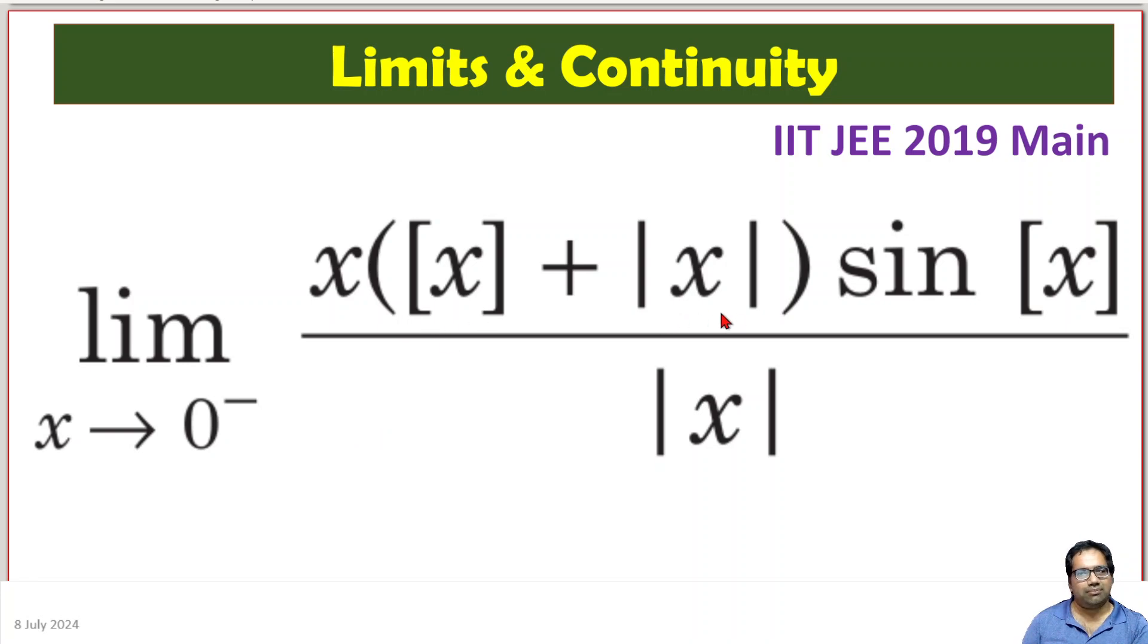This becomes minus x, right? Because x is less than 0, this becomes minus x, absolute value of x. This also is absolute value of x. This also becomes minus x, right?